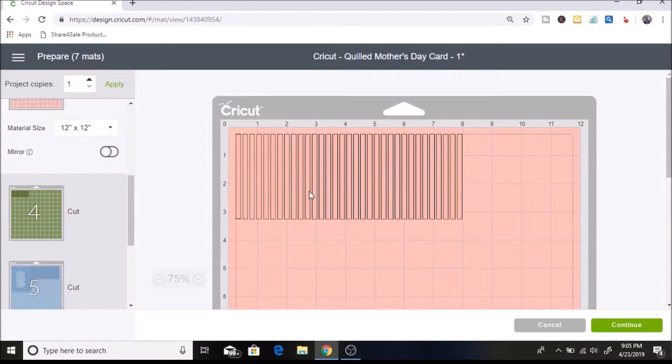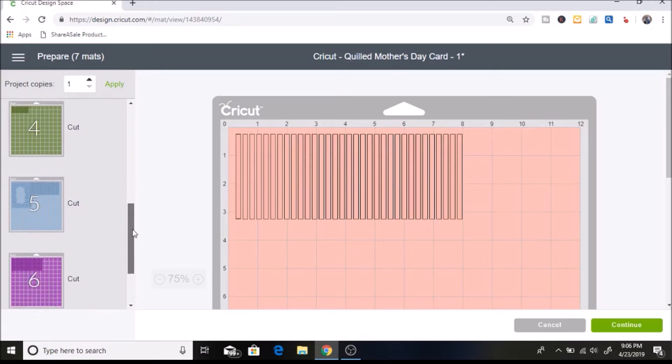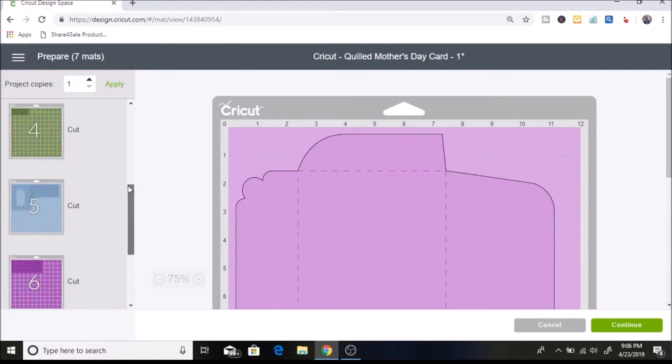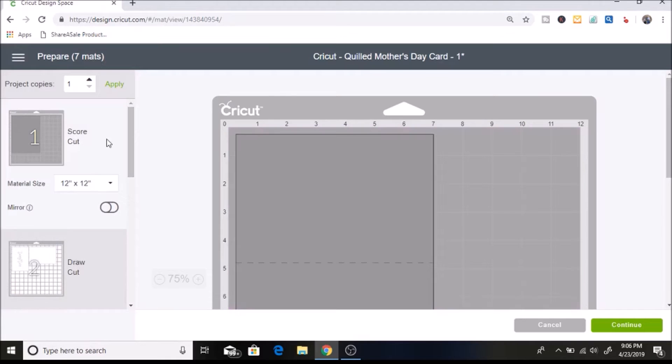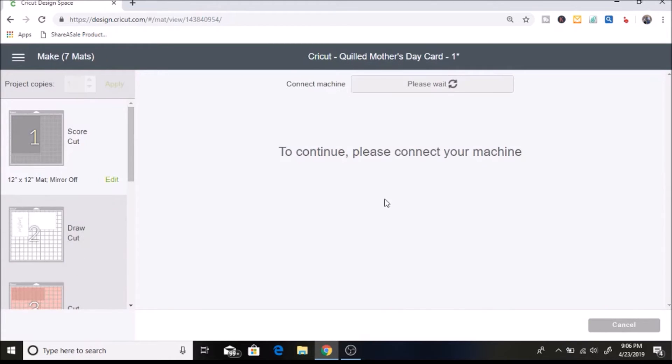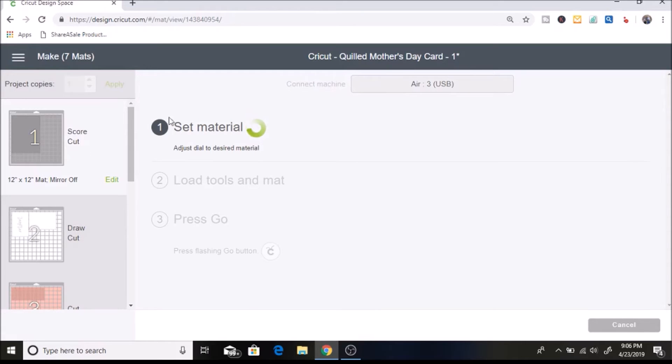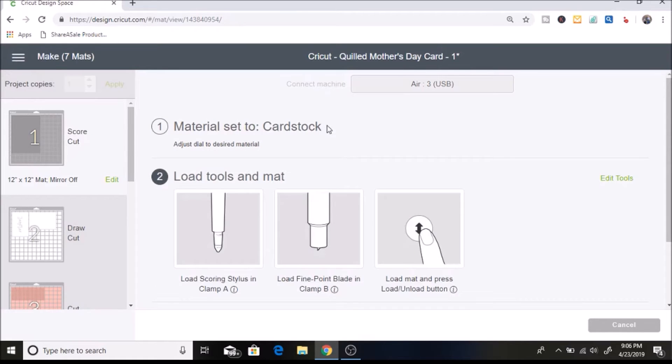And then I'll just keep going down and it'll show me which one to do next. So here are the flower petals. Those are all cut images and this last one's a score and cut. So I'll just start with this one first and then I'm going to click on continue and then once I start using this on my machine it'll just go through each one. And then when it's done it puts a little check mark on the layer that it's done with.